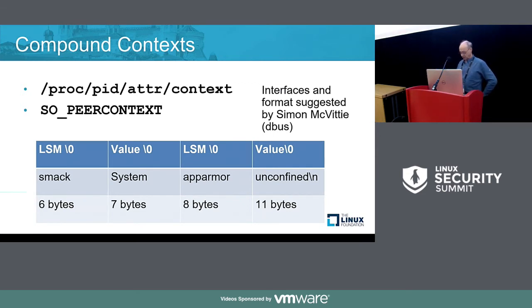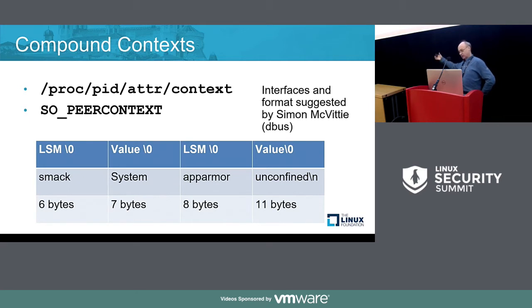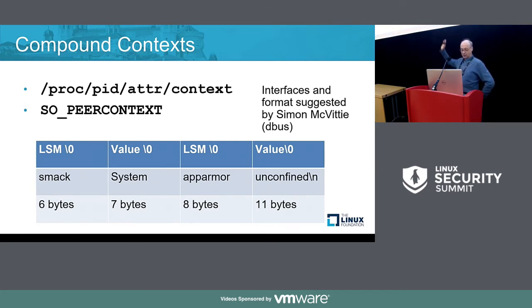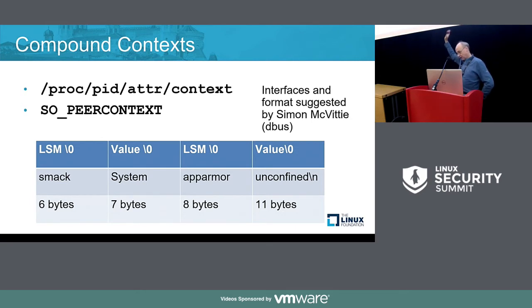/proc/pid/attr/context is like current, except it has all the information about all the security modules affecting the process at the same time. It's done in a very simple format: the name of the LSM, a null, the value, a null, then the name of the next LSM, a null, the value, and so forth. So if you have SMAC and AppArmor on a system, you'll get the word SMAC, then the value for the SMAC label, then the word AppArmor, then the value for that context.